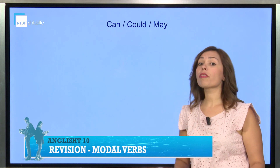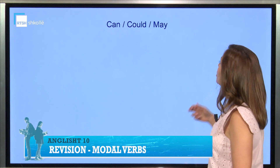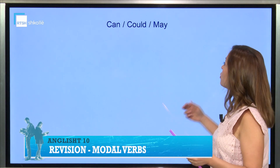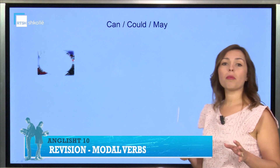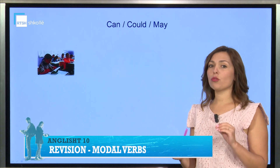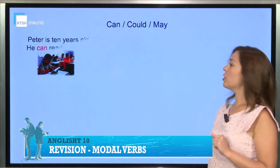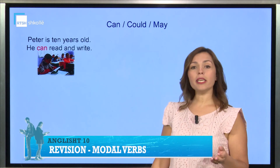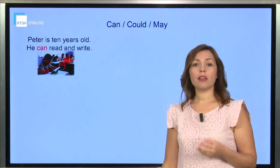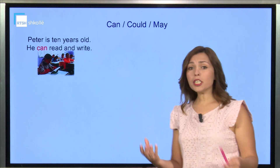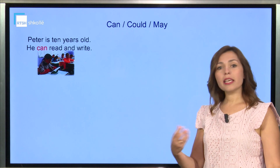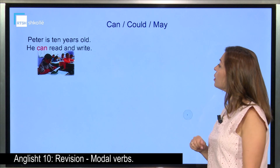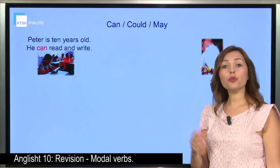Let's deal with the modal verbs can, could, and may. I know that many of you have many examples in your minds. Let's see some of those together. We can see this boy — this is Peter. Peter is 10 years old. He can read and write. This shows an ability of his. He can go to school maybe on his own. And of course, that refers to the present.